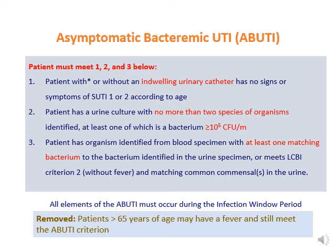The third type is called ABUTI, which refers to asymptomatic bacteriemic urinary tract infection and can occur in patients with or without urinary catheters. Since it is asymptomatic, there are no signs or symptoms. The additional elements are laboratory evidence: a positive urine culture with no more than two species, at least one of which is a bacteria at ≥10^5 colony-forming units per milliliter, and a positive blood culture that matches the urine culture. Note that patients older than 65 years of age may have fever and still meet the ABUTI criteria, because elderly patients may have fever for non-specific causes, so fever is not taken into account.